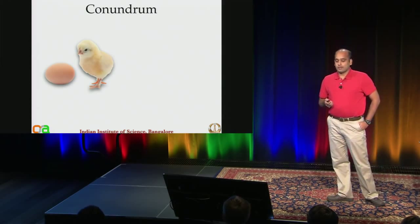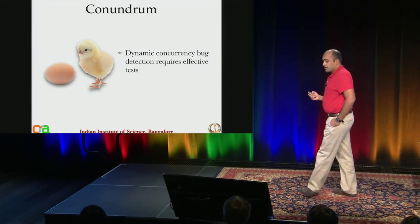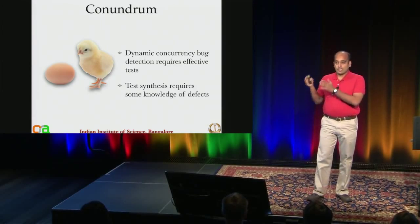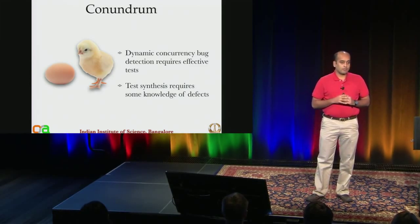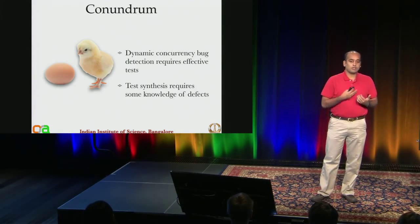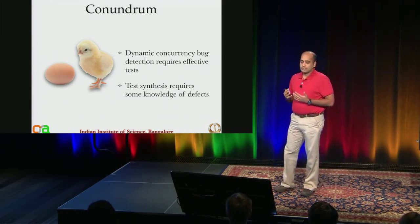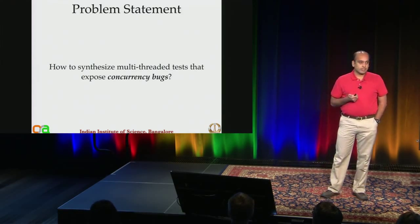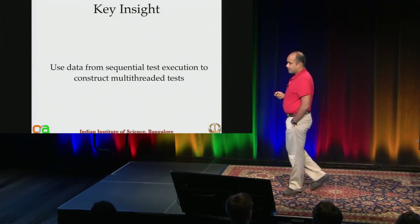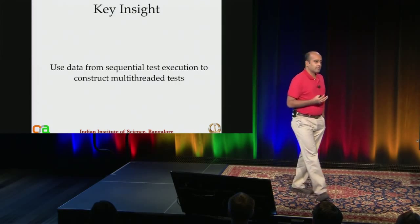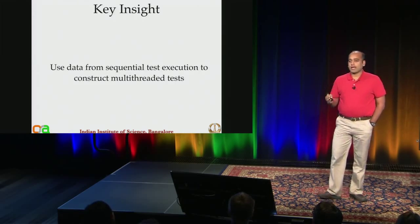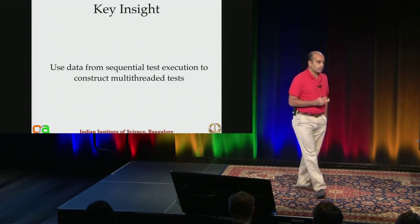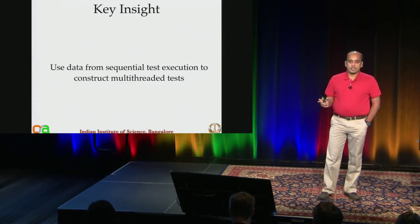Some of you may be wondering: you just said dynamic concurrency bug detection requires effective tests, and now you are saying synthesize tests — but how do I synthesize them in a targeted manner if I don't know where the defects are? The key insight is that most code repositories will have sequential tests, and writing sequential tests is not as hard as writing multithreaded tests. So we can leverage this and analyze the execution traces of sequential tests to construct multithreaded tests.